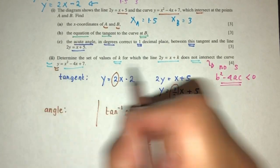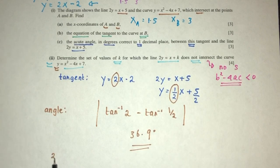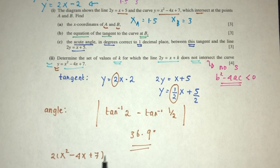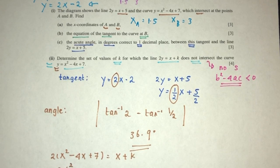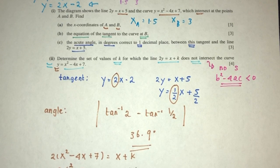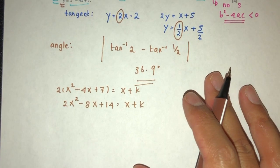Let's solve. Here we have y. We can replace y here. You have 2 times y minus 4x plus 7 equal to x plus k. That should be 2x squared minus 8x plus 14 have to be x plus k. Right?